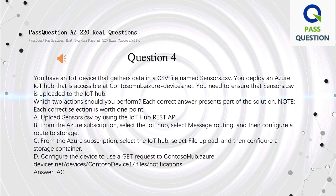select the IoT Hub, select Message Routing, and then configure a route to storage. C. From the Azure subscription, select the IoT Hub, select File Upload, and then configure a storage container. D. Configure the device to use a GET request to contosohub.azure-devices.net/devices/contosodevice1/files/notifications. Answer: A, C.